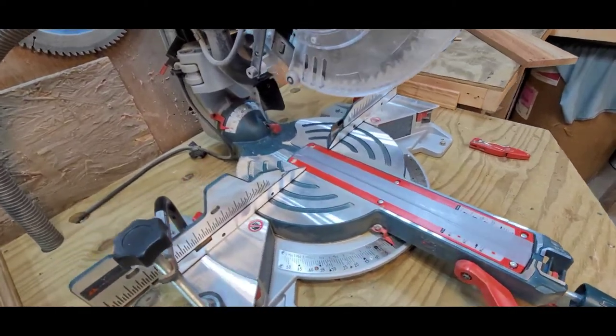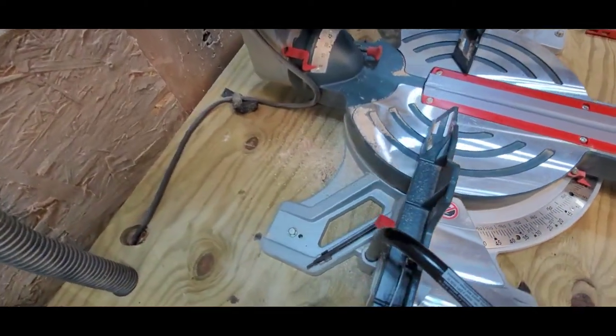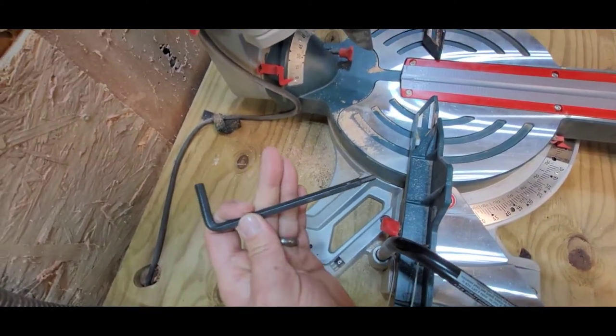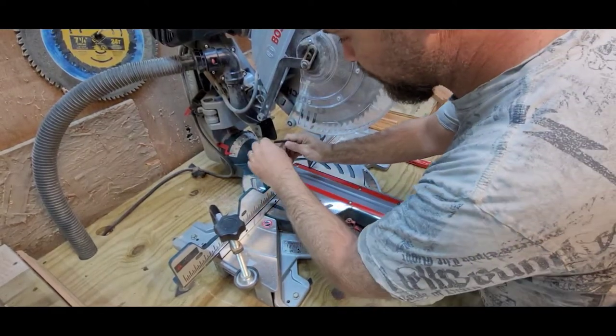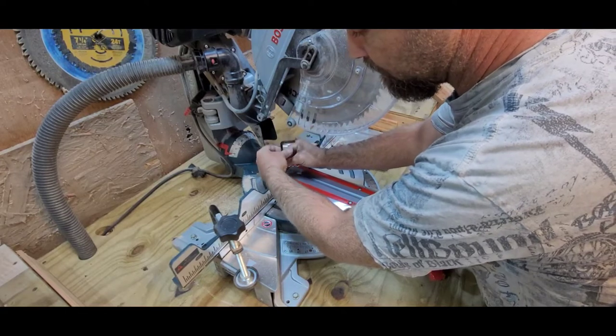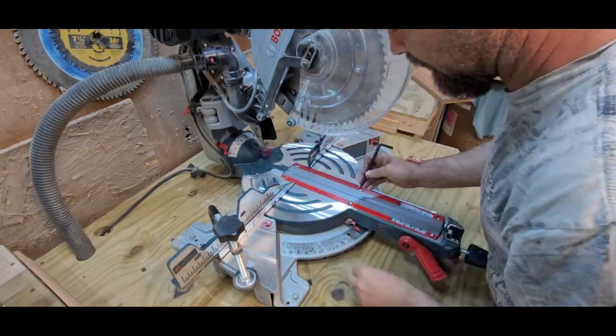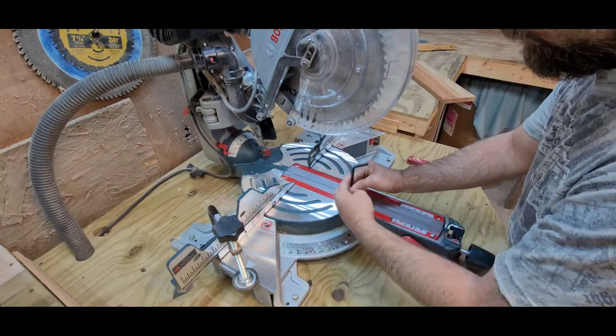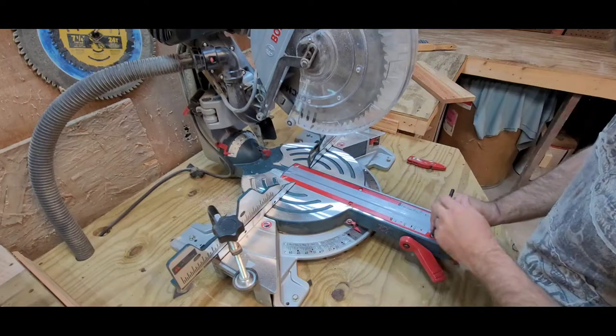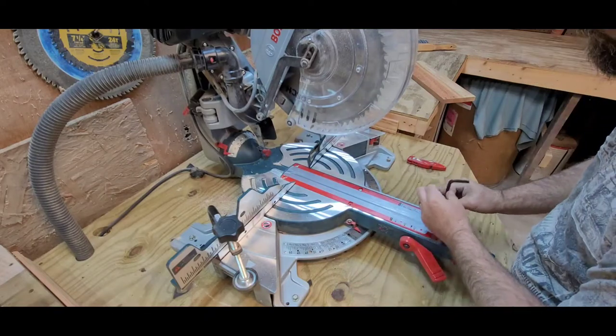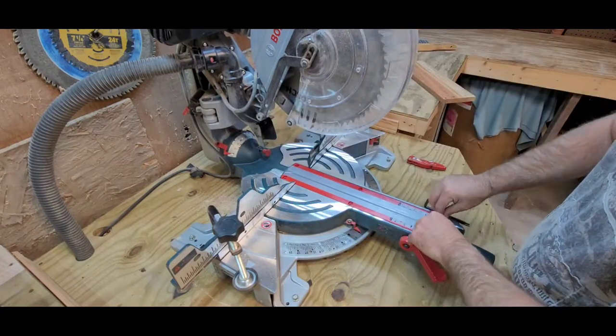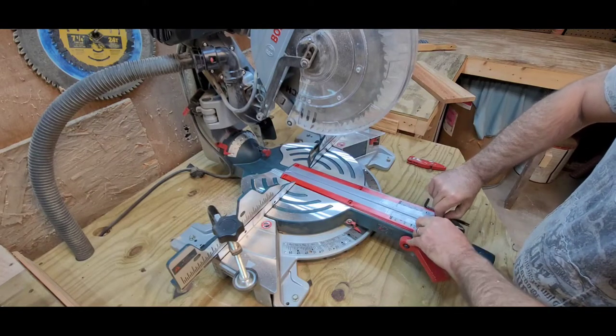We need to take it out. Now if y'all don't know, this particular Bosch saw has an Allen wrench right here. Now the reason we put the tape on there was so that it stays the same width while we take our screws out and we're going to transfer this to the piece of wood. Now we should be able to lift it right out as one piece.